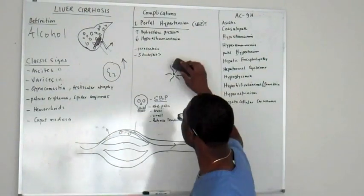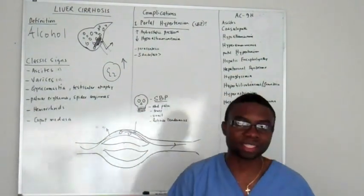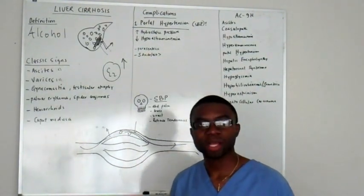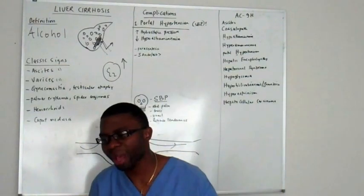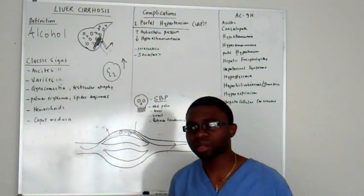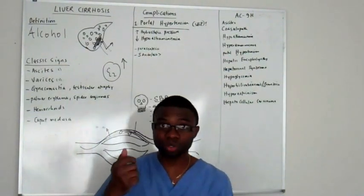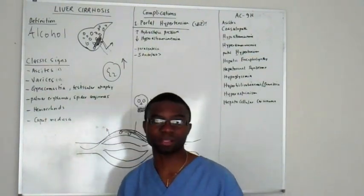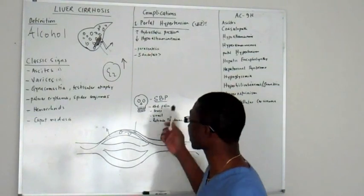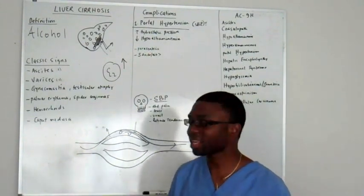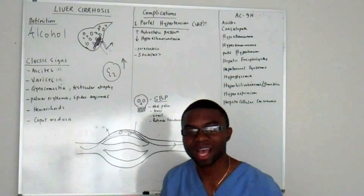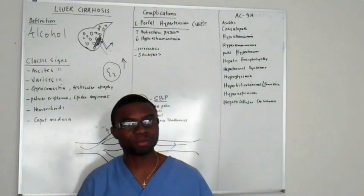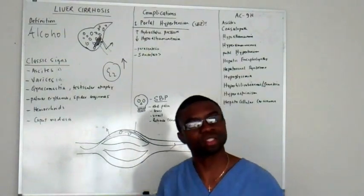Another complication mentioned in the last video was hemorrhoids. The patient tells you they see blood when they wipe. You do a rectal exam and see dilated inferior rectal veins. It's the same pathophysiology. That's where hemorrhoids come from - these veins can't drain back into the liver.